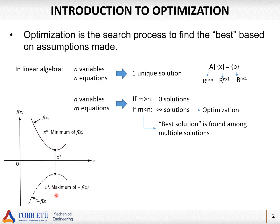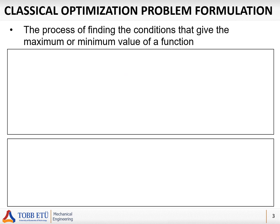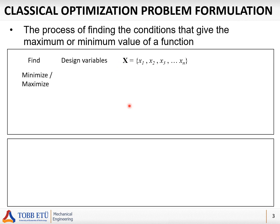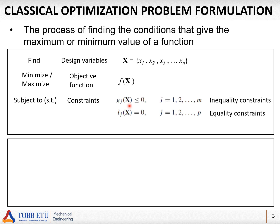So not all solutions are equal — there is one better solution called the optimized solution, and we use optimization to find it. We find the best solution among multiple solutions. We can either minimize a function or maximize it to find the optimum point. In the optimization formulation for a classical problem, we find conditions giving the maximum or minimum value of a function. We have design variables — unknowns such as x — and we want to minimize or maximize an objective function f(x), subject to constraints including inequality and equality constraints.